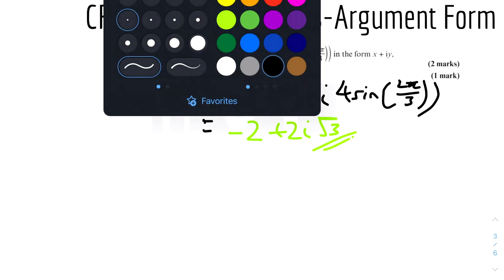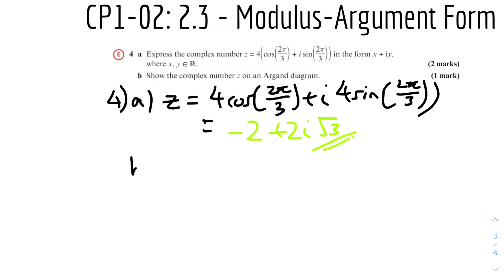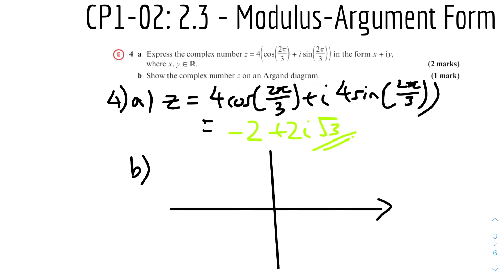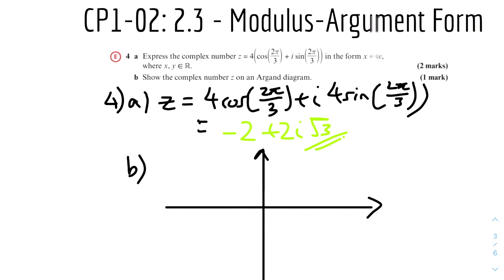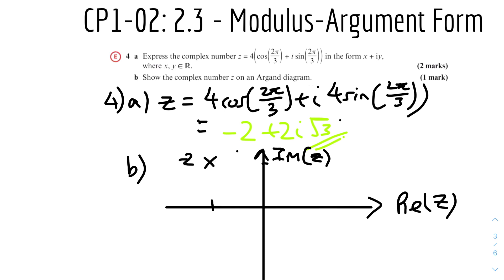Now show the complex number z on an Argand diagram. The imaginary axis is the y-axis and the real axis is the x-axis. The real part is −2, so we plot that to the left. The imaginary part is 2√3, which is approximately 3.46, so we plot that upward. The point z lies at (−2, 2√3) in the second quadrant.